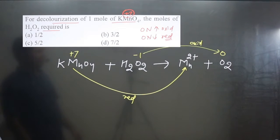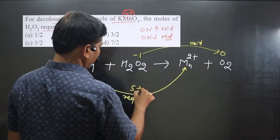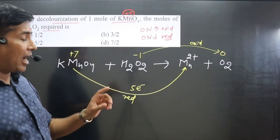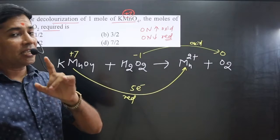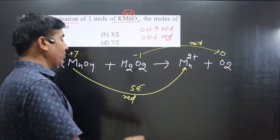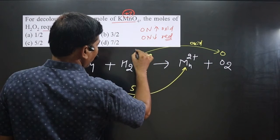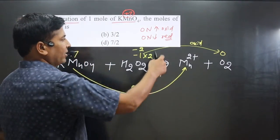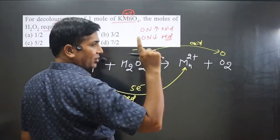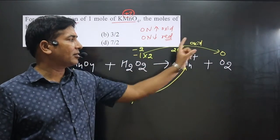Now we balance the electrons. For manganese: +7 to +2, difference is 5 electrons (reduction). For H₂O₂, balance the number of atoms first — there are 2 oxygens on both sides, each at oxidation number −1. So total oxidation number for 2 oxygens is −2. On the product side, 2 oxygens at 0 gives total 0. Difference: 0 − (−2) = 2 electrons (oxidation).